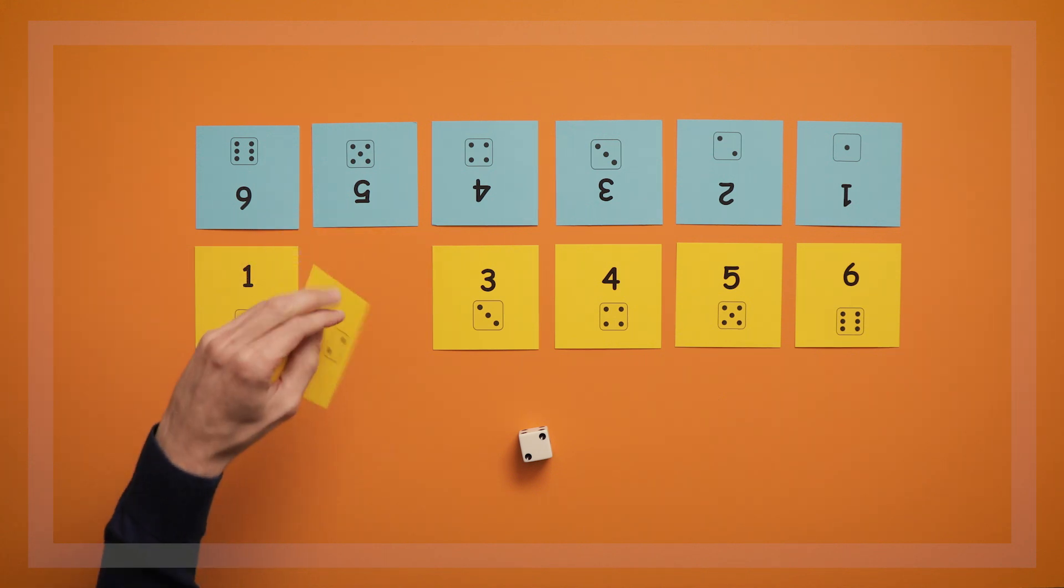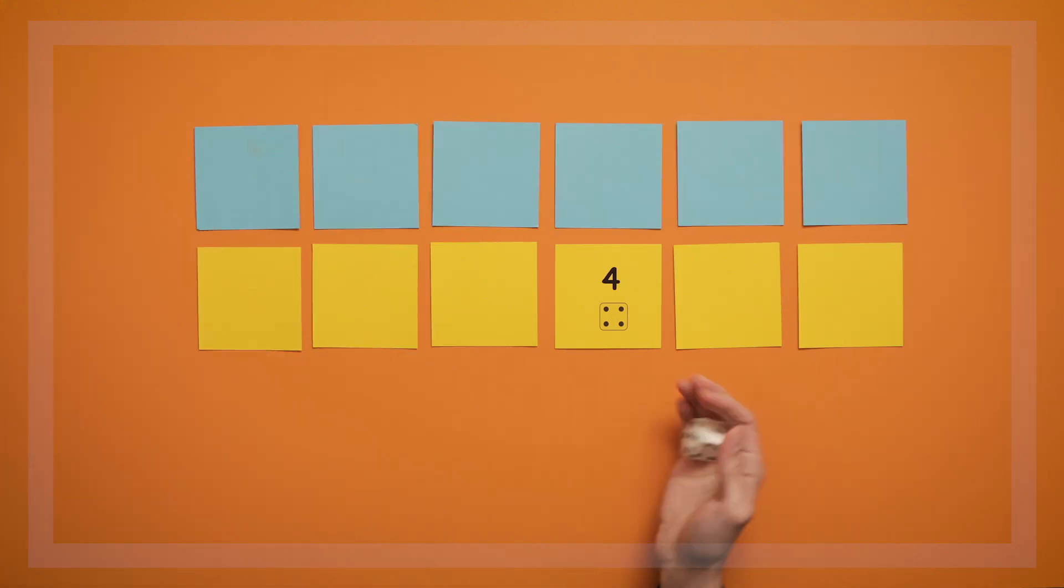In Roll 1, each player takes turns rolling one die until they've flipped over all their cards.